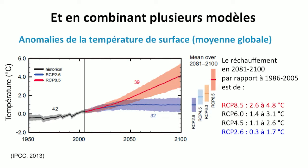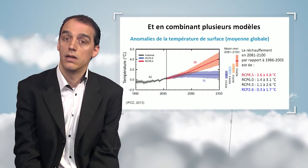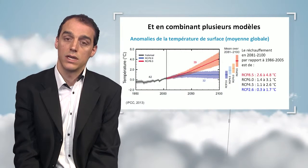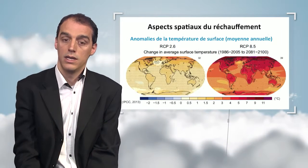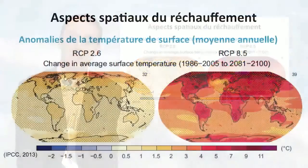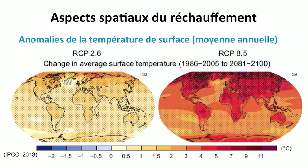Using all climatic models gives us a certain uncertainty for scenario RCP 8.5. The uncertainty ranges from 2.6 to 4.8 degrees Celsius by the end of the 21st century versus the last 20 years. The use of a climatic model also allows us to look into local and regional temperature evolution, not just global averages.